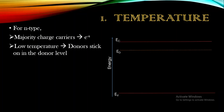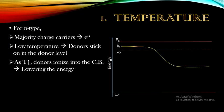In the energy level diagram, we have a valence band and conduction band with energies Ev and Ec respectively. For n-type semiconductors, we have a donor level just below the conduction band. At low temperature, donors are stuck in the donor level itself — this is the freeze-out range — so the Fermi level lies intermediate between the donor level and the conduction band.